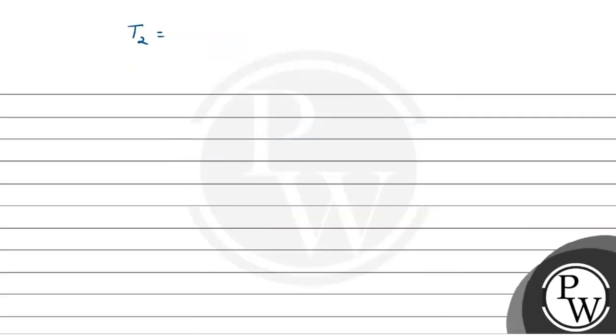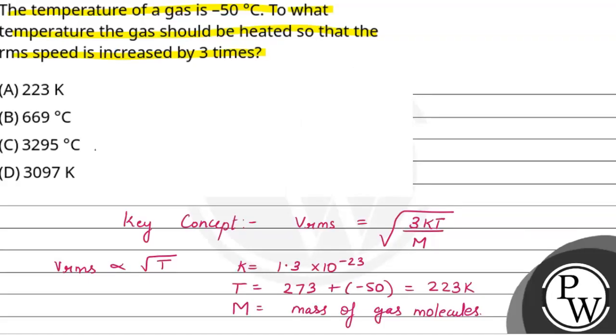So T2 is equal to 3295 degree Celsius. This is the temperature. Correct option is option C, 3295 degree Celsius. I hope you understood it well. Best of luck.